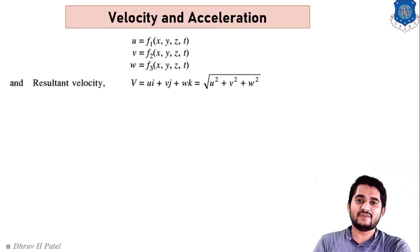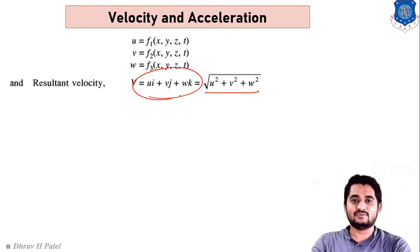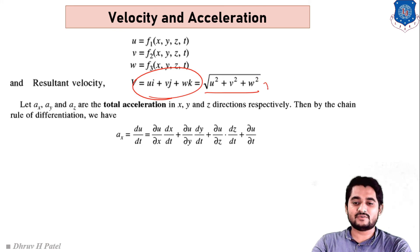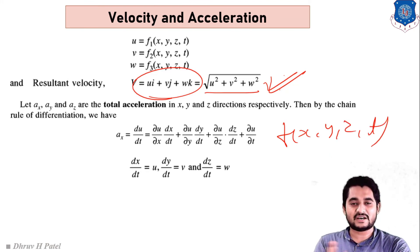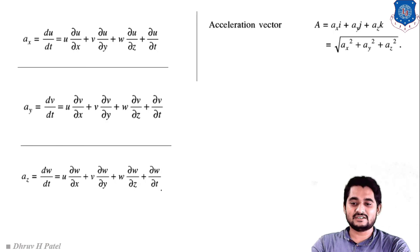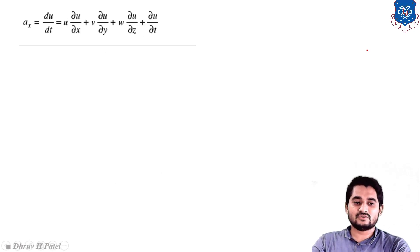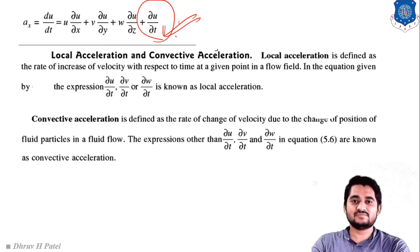Now let us revise velocity and acceleration of fluid particles. Velocity is represented as vectors u, v, and w in the x, y, and z directions respectively, and we can find the resultant velocity. Acceleration is a function of x, y, z, and time, so we differentiate it partially to get acceleration in each direction and the resultant acceleration. From that equation we can distinguish local acceleration — derivation with respect to time — and convective acceleration, which includes all other spatial derivative terms.